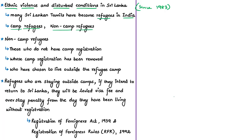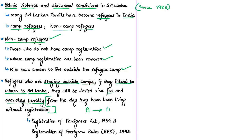Today's focus is on those refugees who do not have camp registration, those whose camp registration has been removed, or those who have chosen to live outside the refugee camps — collectively referred to as non-camp refugees. When such refugees staying outside the refugee camps want to return to their homeland Sri Lanka, they are levied a visa fee and overstay penalty applicable from the day they have been living in India without registration.